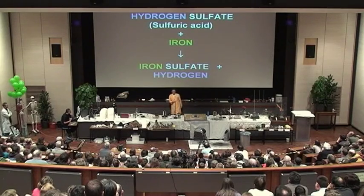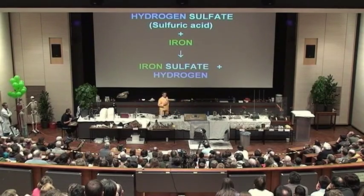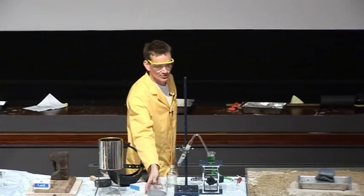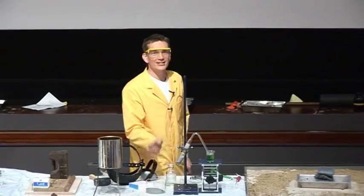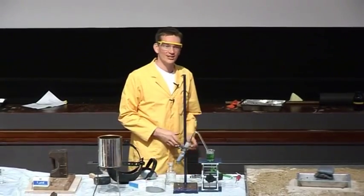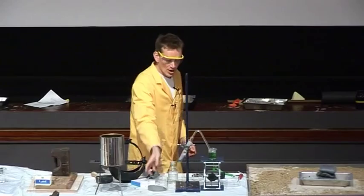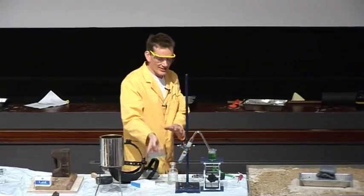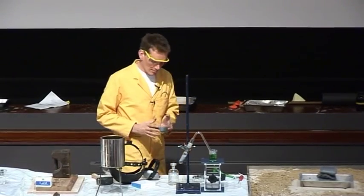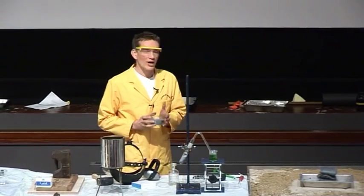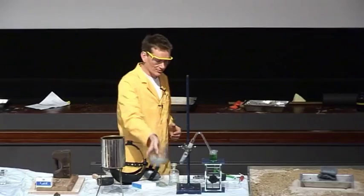But I can hear you thinking — you're thinking: he's used two chemicals here. He's used iron, and he's used sulfuric acid. So where do these things come from? Well, we'll come back to the acid later. But first of all, what about the iron? Where do we get metals from?